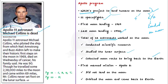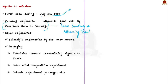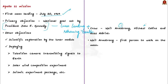Astronauts on Apollo missions studied the lunar surface and collected moon rocks to bring back to Earth. The first manned mission to the moon was Apollo 8, which orbited but did not land. The first moon landing occurred during Apollo 11 in July 1969. Its primary objective was to fulfill President John F. Kennedy's national goal of performing a crewed lunar landing and returning to Earth. The crew consisted of Neil Armstrong, Michael Collins and Buzz Aldrin. Neil Armstrong became the first person to walk on the moon.